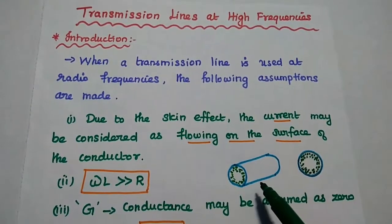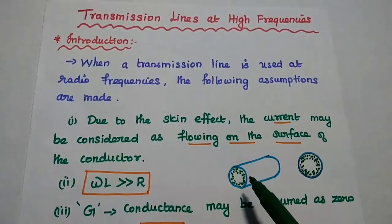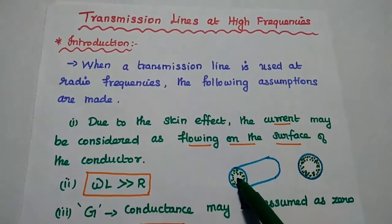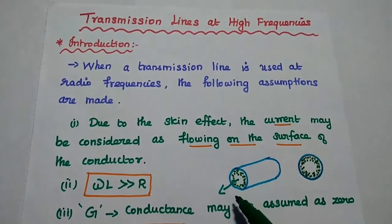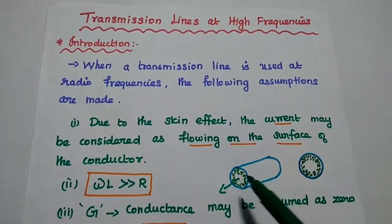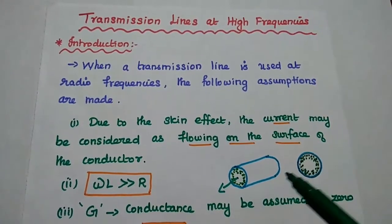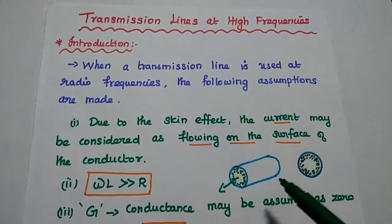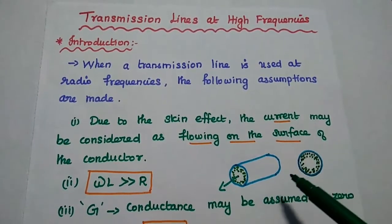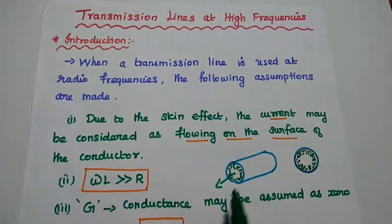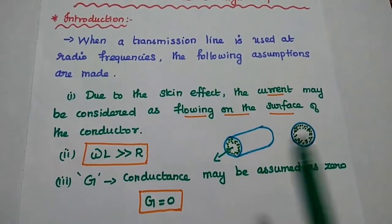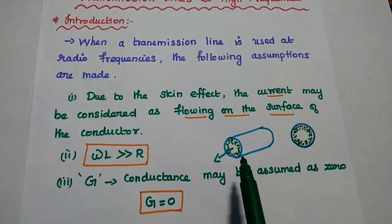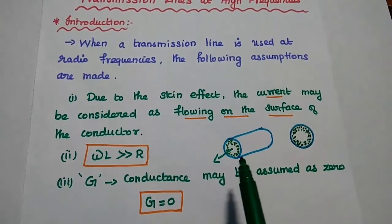Consider this is the transmission line. In this one, the current is flowing on the surface; inside, there is no current flow. This happens due to skin effect. Skin effect means it is opposing the eddy current. So at high frequency, the current is flowing on the surface of the transmission line conductor.